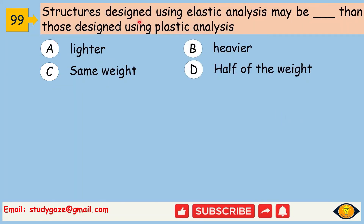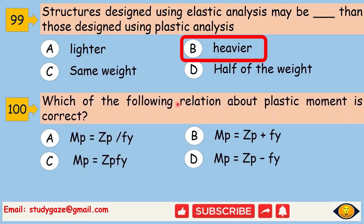Structures designed using elastic analysis may be heavier than those designed using plastic analysis. Next, which of the following relations about plastic moment is correct? Answer is: Mp equal to Zp times Fy.